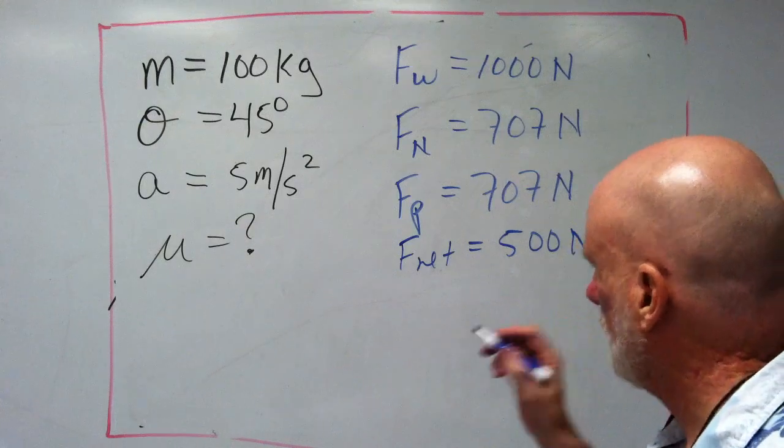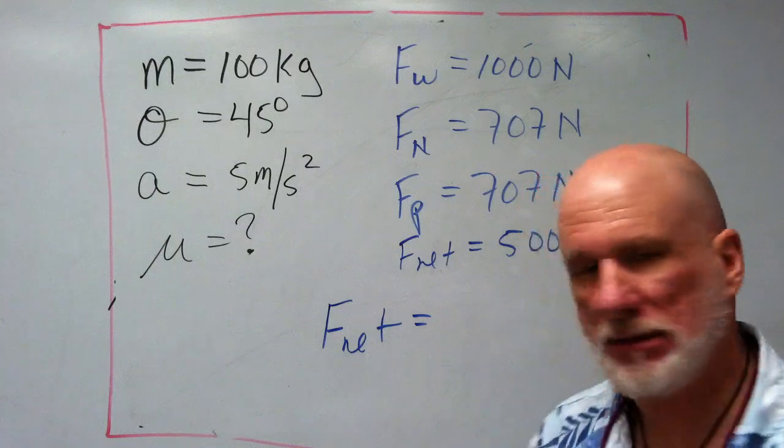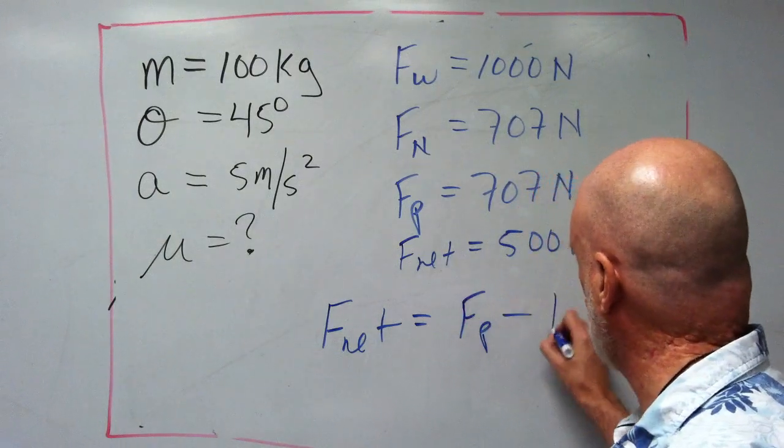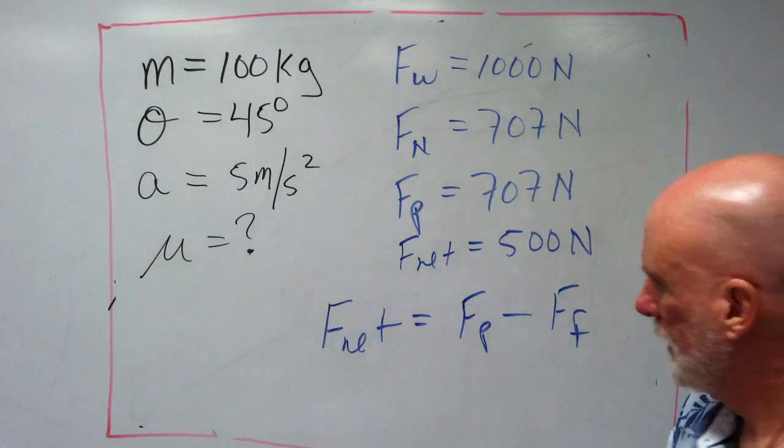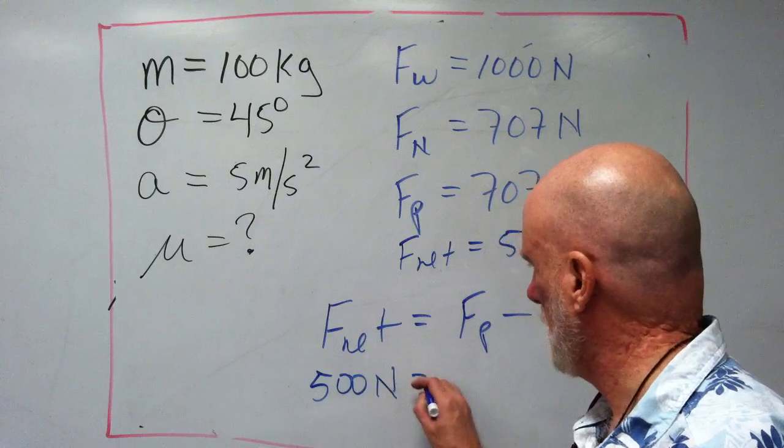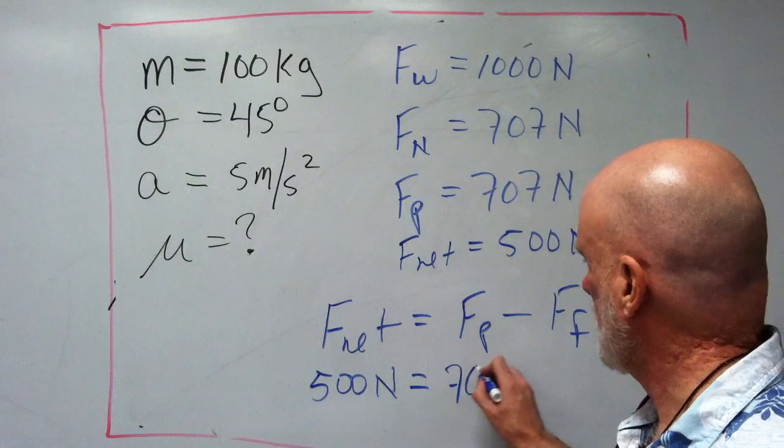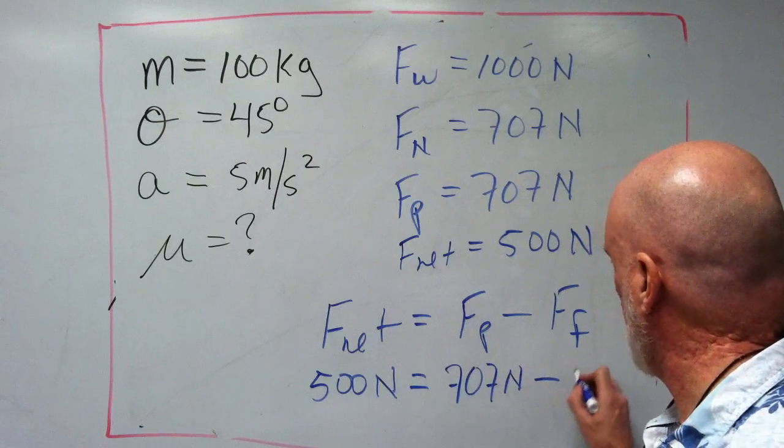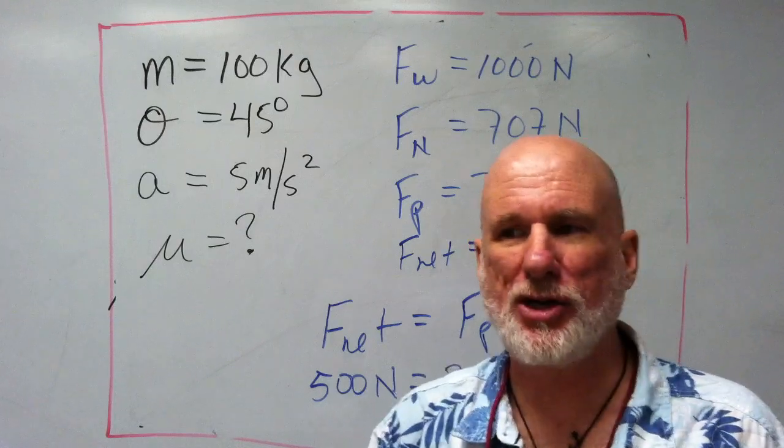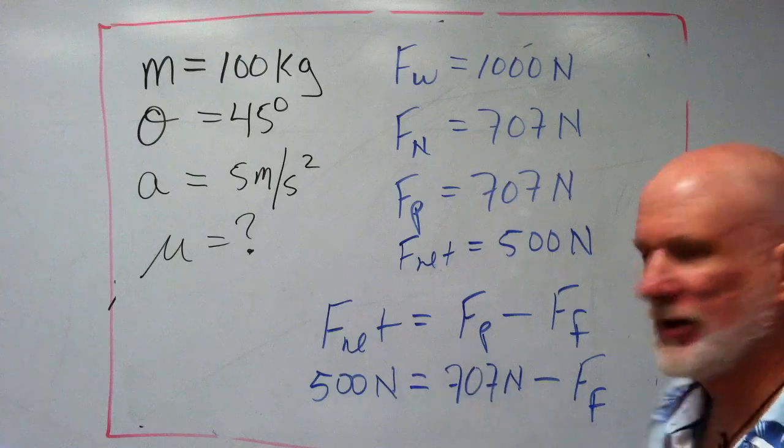Now, we also know that the net is going to be Fp minus Ff. Right? And this is going to be 500 equals, equals 707 minus Ff. Now, we could use middle school math. We don't even need algebra.